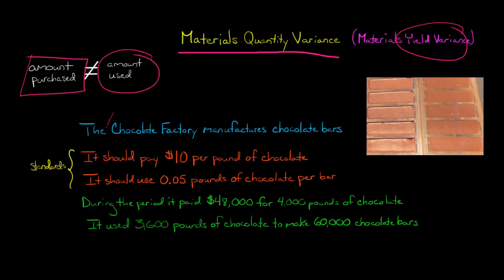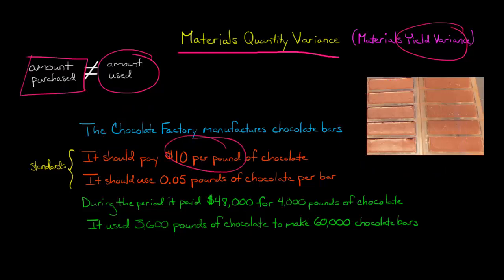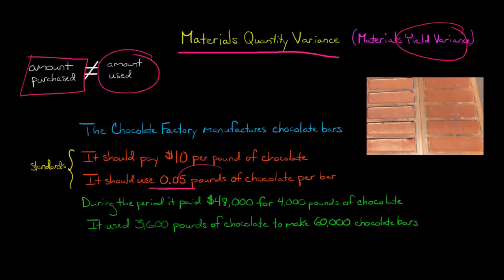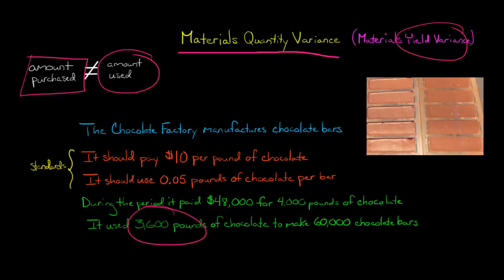Let's say we have a company called the Chocolate Factory, and they manufacture chocolate bars. They should pay $10 per pound of chocolate — that's one of the company's standards. Another standard is they should use 0.05 pounds of chocolate to make one chocolate bar. Then actually during the period, they pay $48,000 for 4,000 pounds of chocolate, and they use 3,600 pounds.